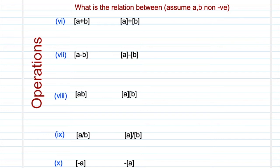Just like the previous video, we have to find the relationship between the left-hand side and the right-hand side. Let's get started with property number 6: we have to figure out if ⌊a+b⌋ is less than, greater than, or equal to ⌊a⌋ + ⌊b⌋. In many solutions on the internet, people often assume there is equality — that is a mistake. It is not necessarily equal.